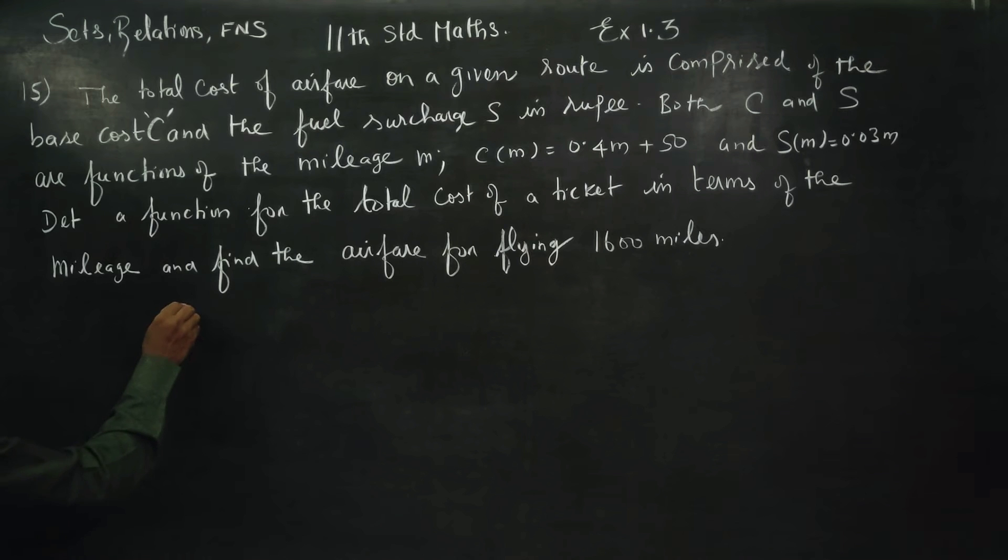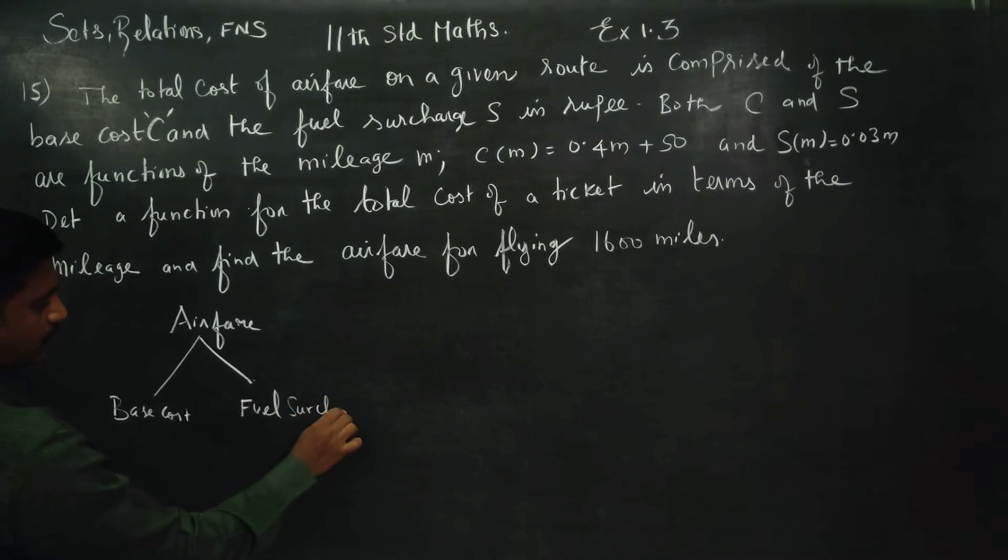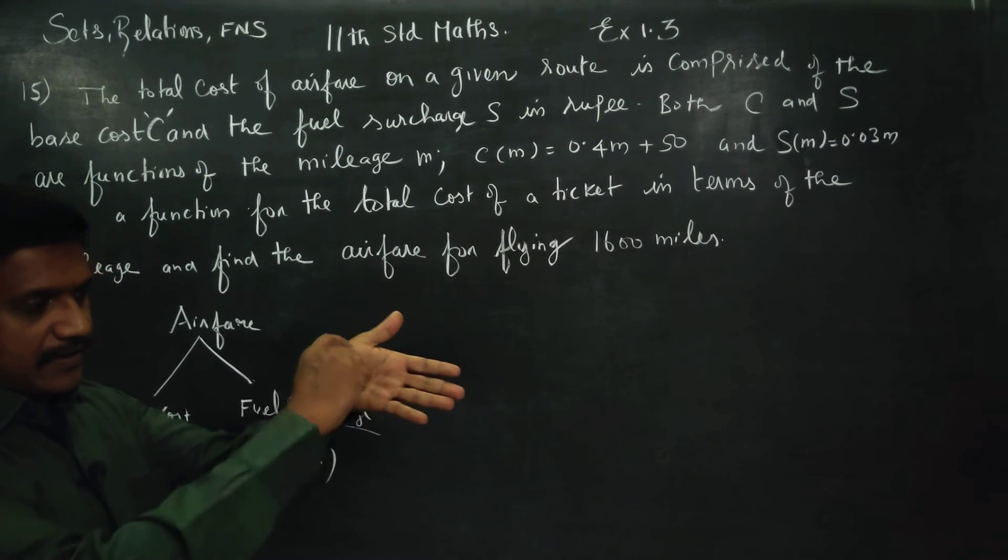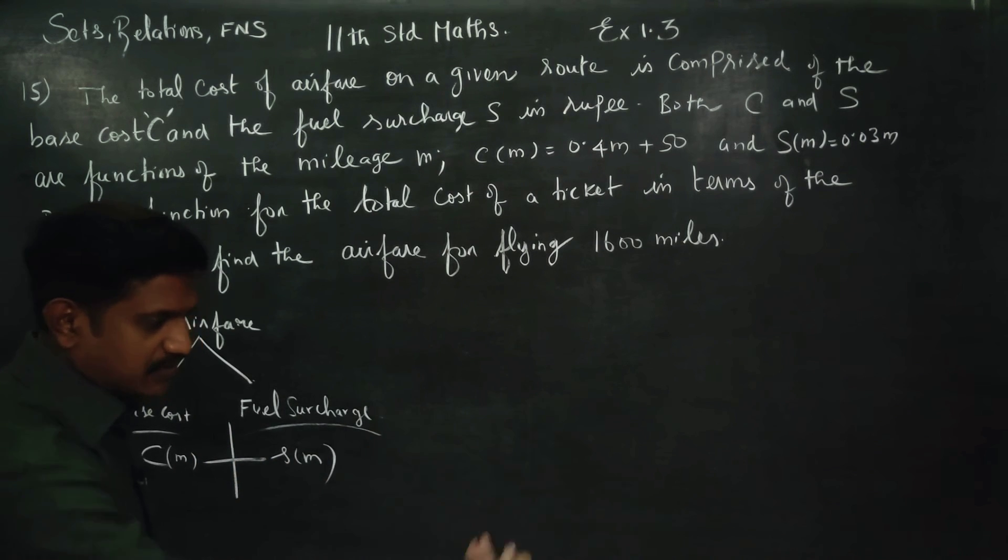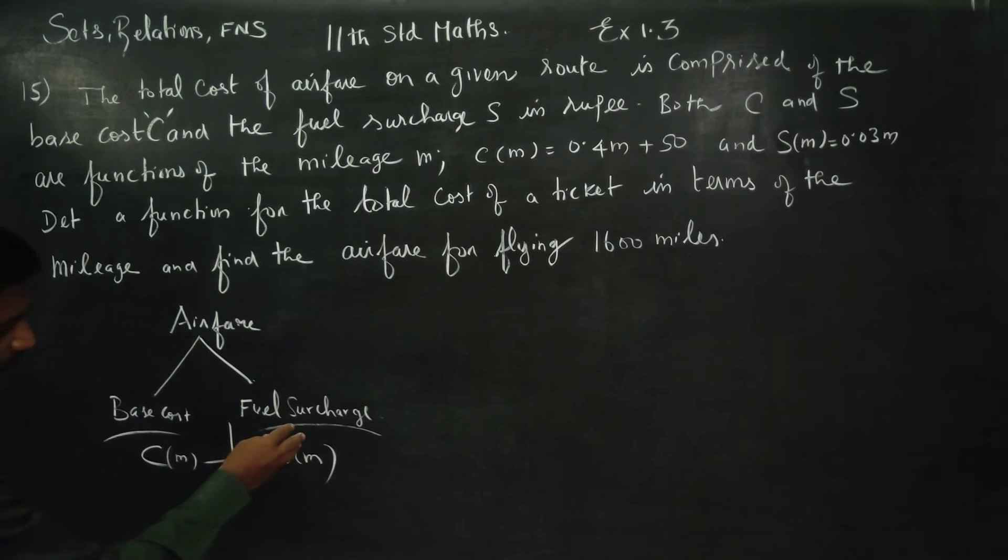Our airfare has two costs: base cost and fuel surcharge. The total airfare is the sum of these two costs. Base cost is C of M and fuel surcharge is S of M. The ticket has two bifurcations: base cost and fuel surcharge.